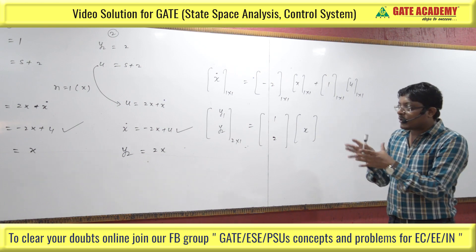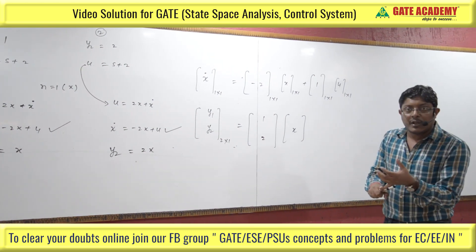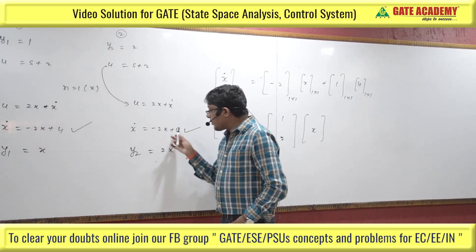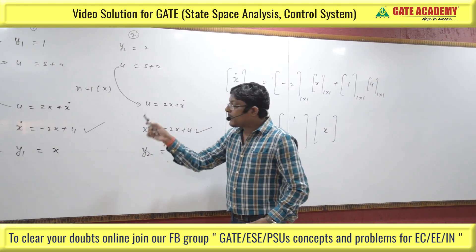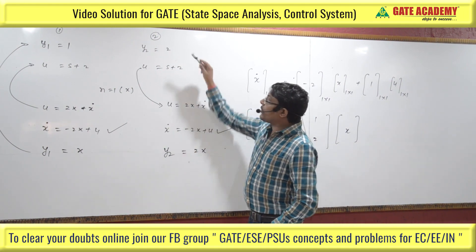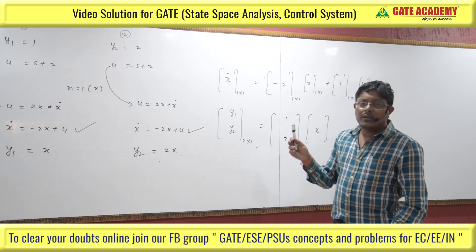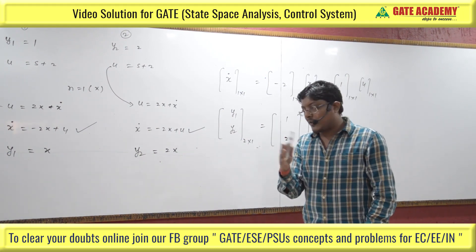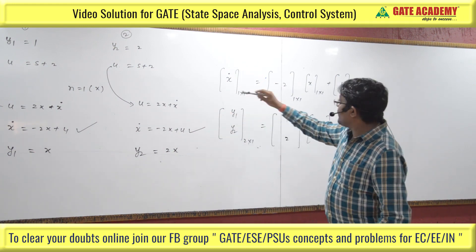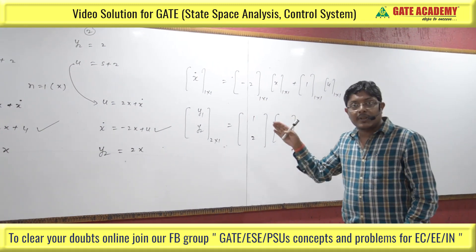This is the conventional approach using the direct decomposition method, also called the phase variable form. The x-dot equation contains a single element for state variable and input, and the output equations differ for each output. This confirms the representation. I think it is now clear how to represent the state variable model. Thank you.